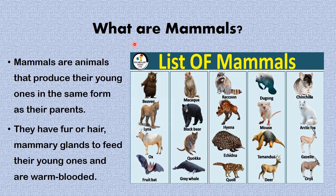Now we'll be looking at the topic: what are mammals? Mammals are animals that produce their young ones in the same form as their parents. They have fur or hair on their skin, they have mammary glands to feed their young ones, and they are warm-blooded — in other words, they maintain a constant body temperature.